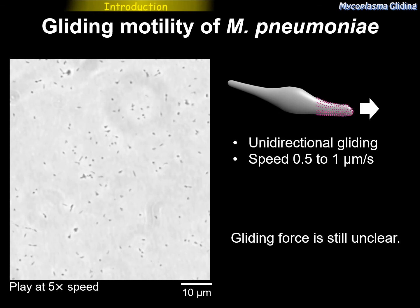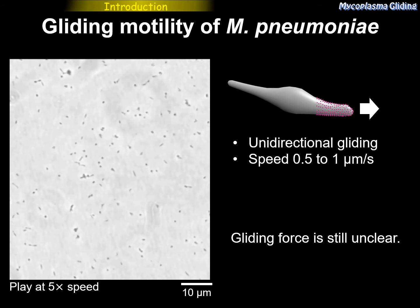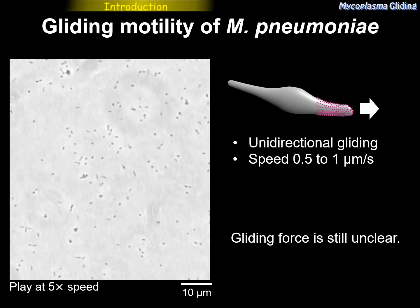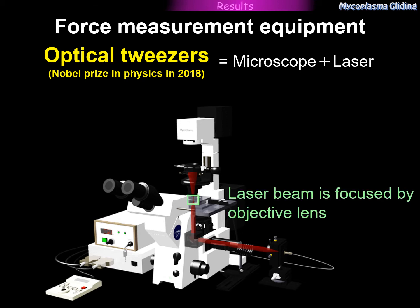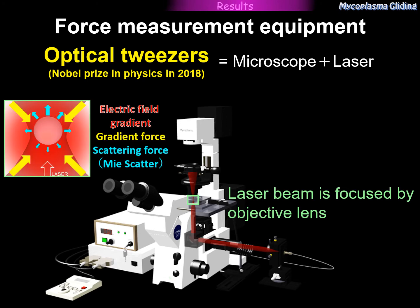So here, we focused on the force measurement of Mycoplasma pneumoniae gliding. To measure the force for gliding, we used optical tweezers. Optical tweezers are a combination of a microscope and a laser. The laser beam, shown as a red line, is focused by the objective lens of the microscope. At the focus point, an electric field gradient is generated by the strongly focused laser, and this electric field can capture small particles.